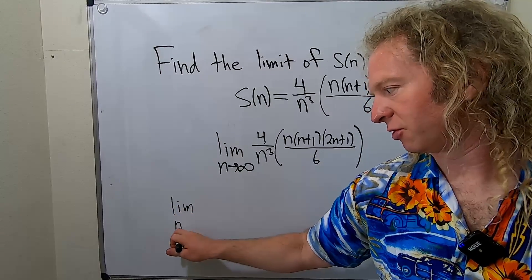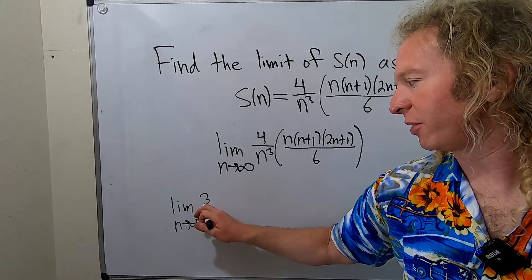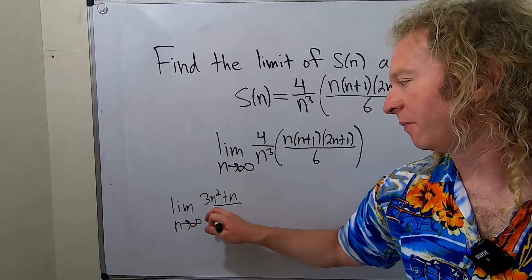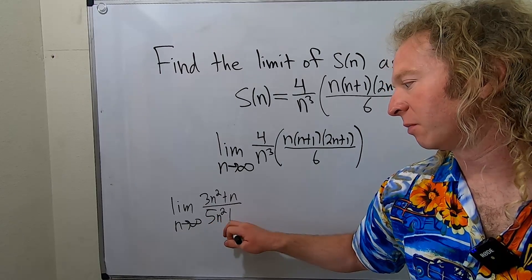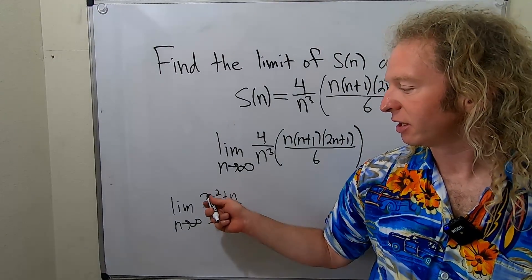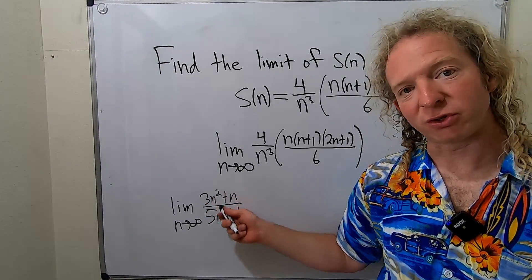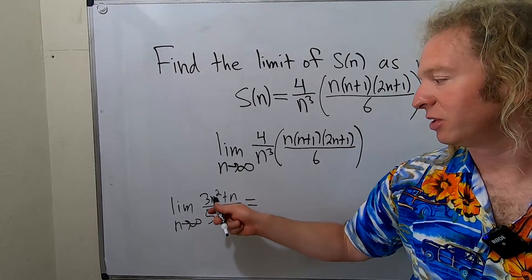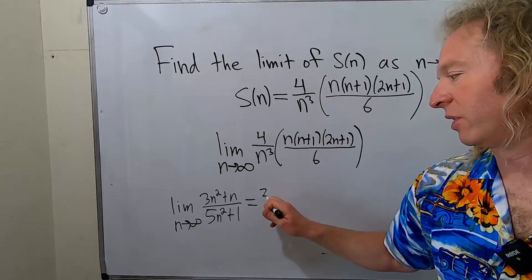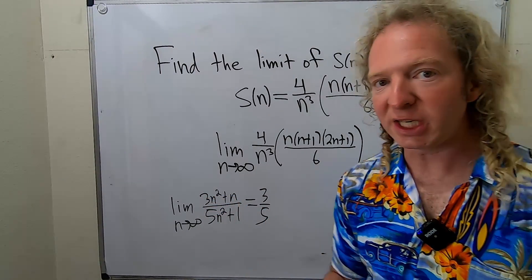So for example, just to derail quickly, say we had 3n squared plus n over 5n squared plus 1. In this case, these powers are the same, so the degrees are the same. So the answer is just 3 over 5. It's the ratio of the leading coefficients.